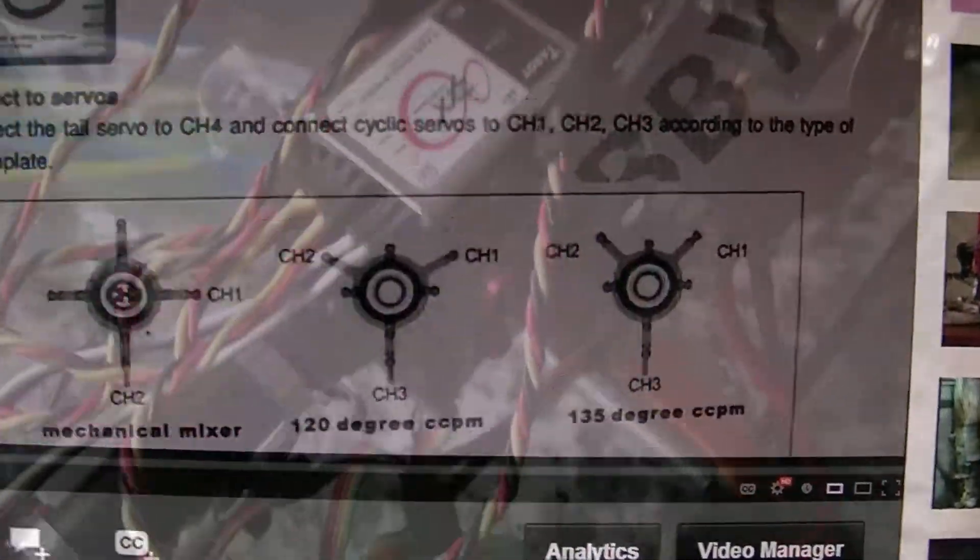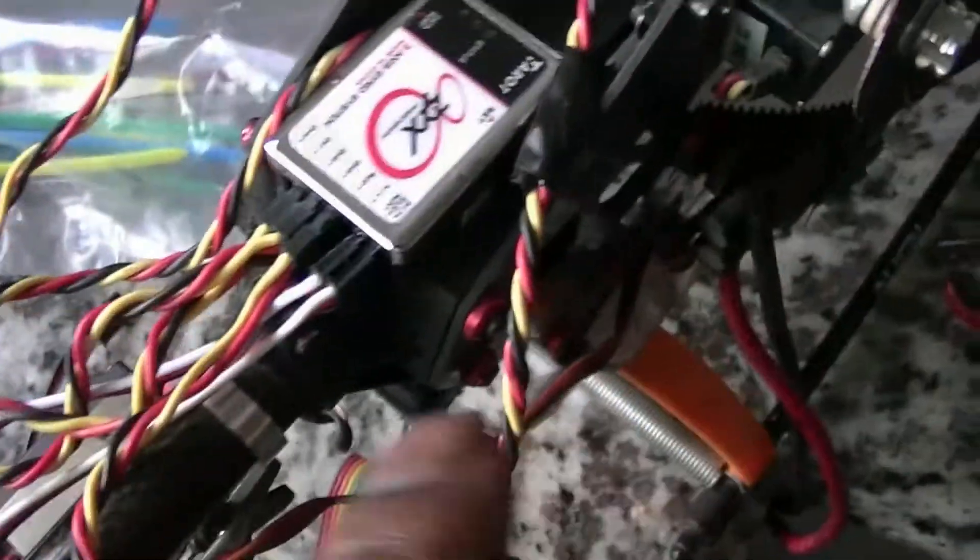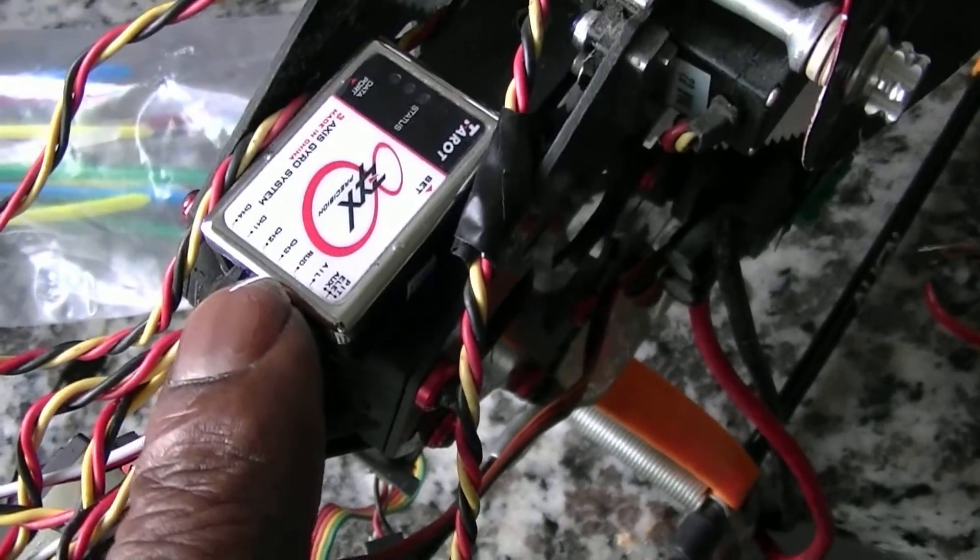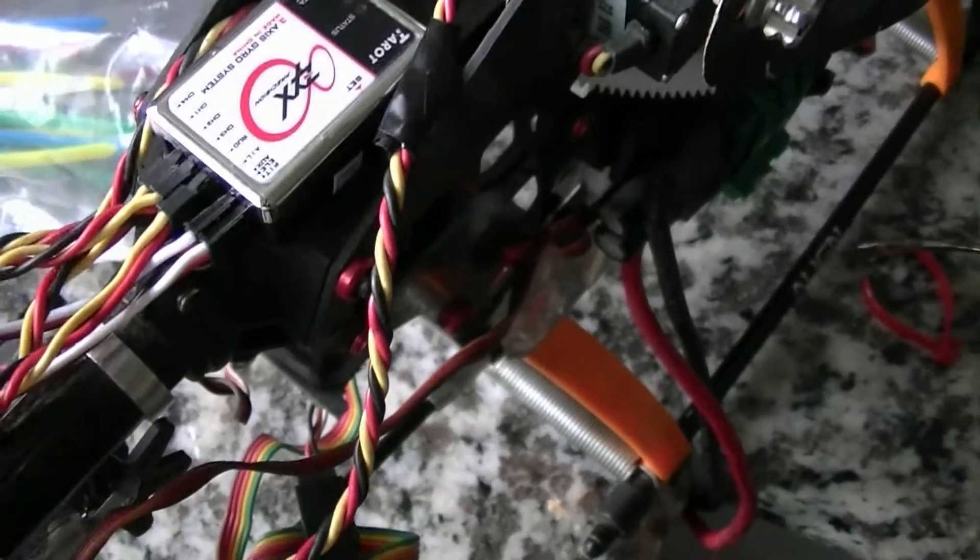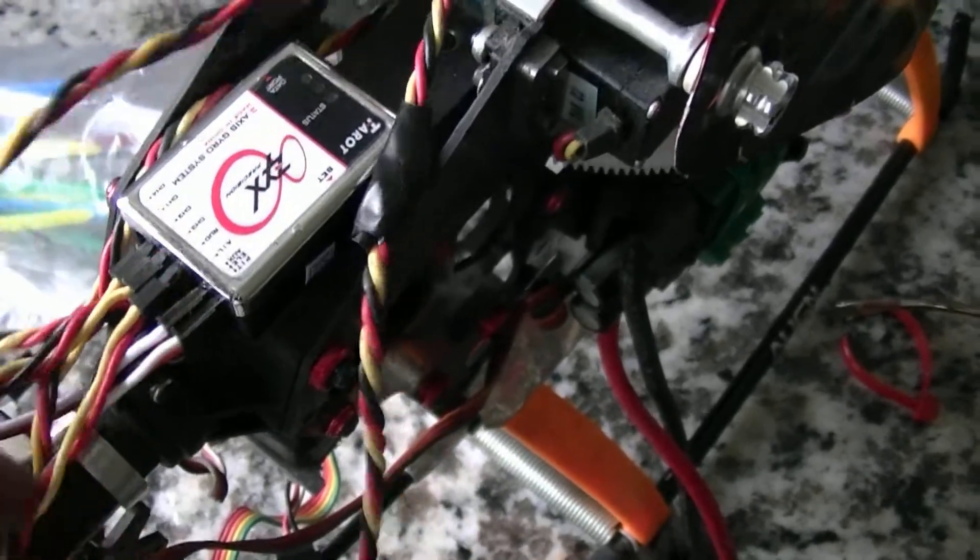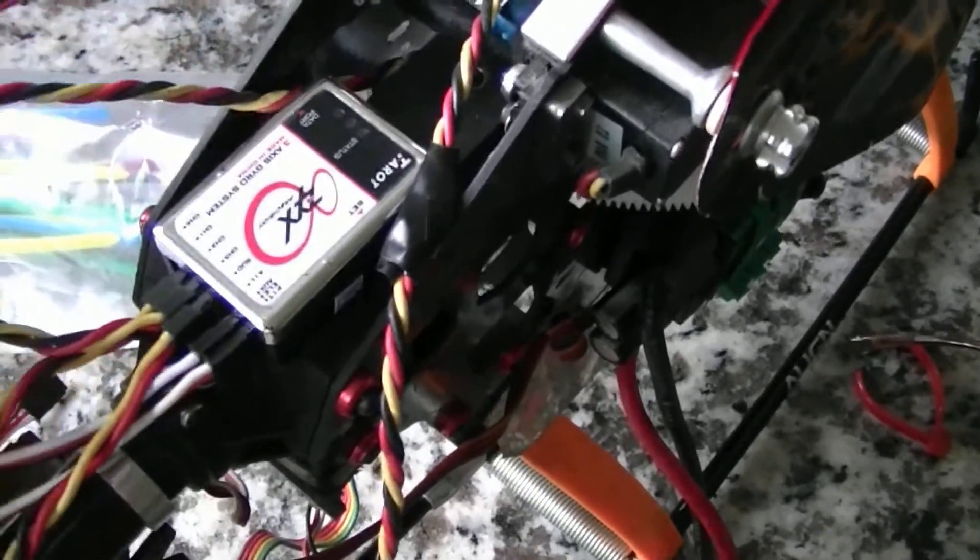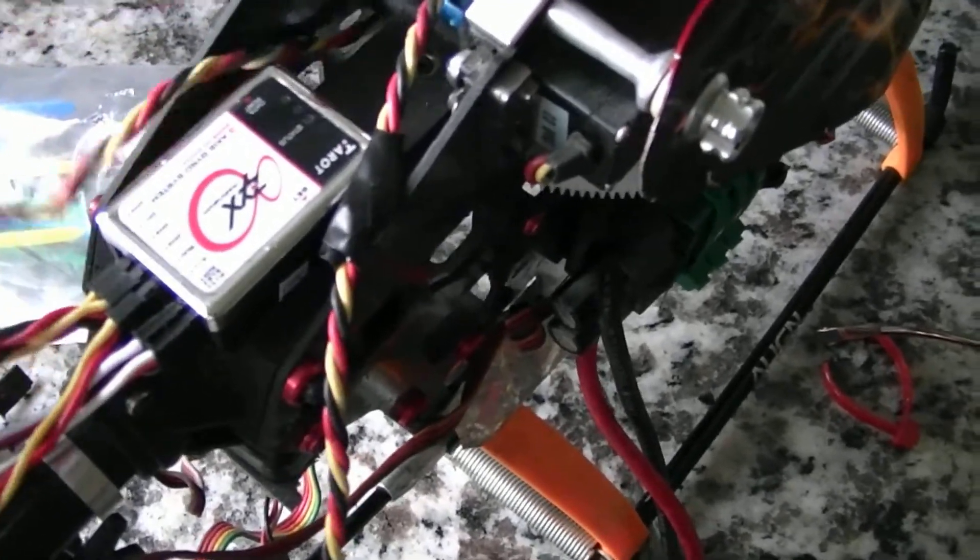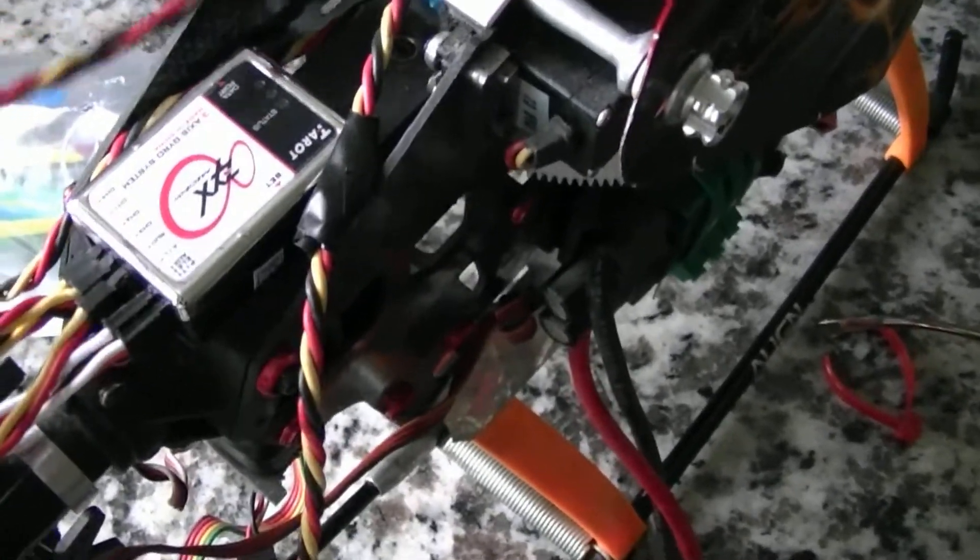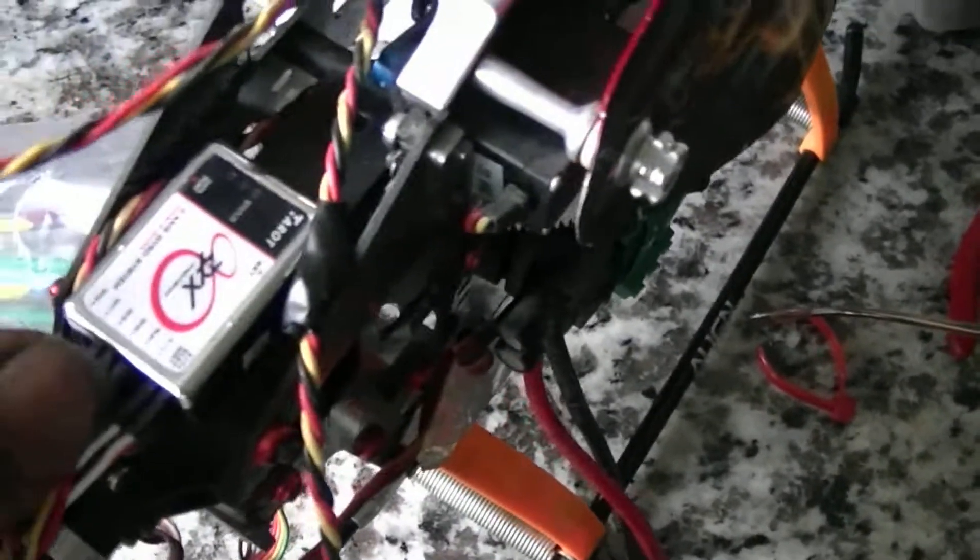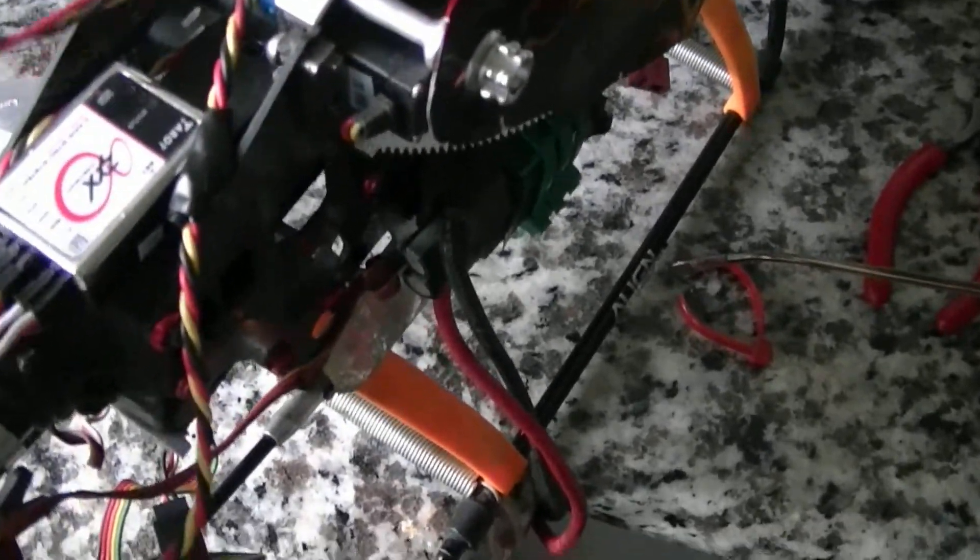So this is simpler - this rear servo goes into channel 2 here. Number 1 is going to your Aileron, which is my servo on the right. Servo on the front right is going into number 1, servo on the rear is going into number 2.